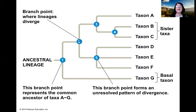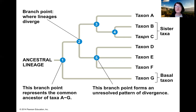Number two, once another speciation event occurs, gives rise to number three and number five. Number three is the common ancestor of A through C, and number five is the common ancestor of D through F. Another speciation event here splits three into A and four. Yet another speciation event splits four into B and C, and B and C are considered sister taxa. So a speciation event can lead to further speciation events, and we can follow them in time: one, two, three, four, and so on.